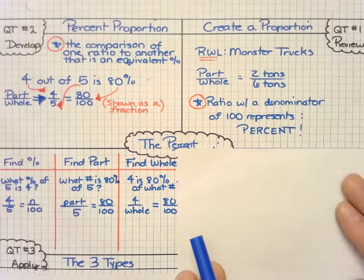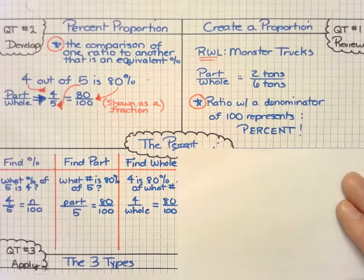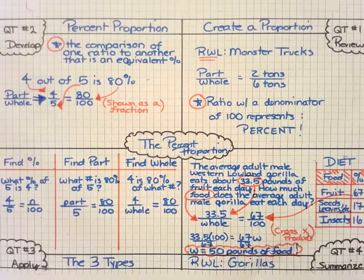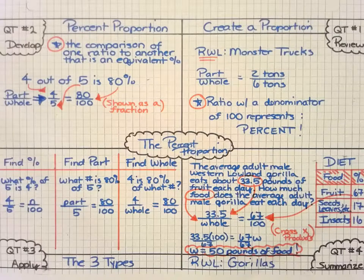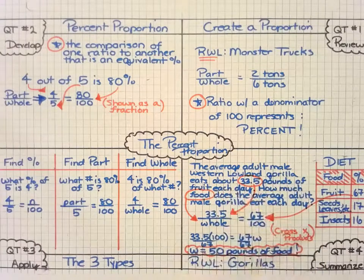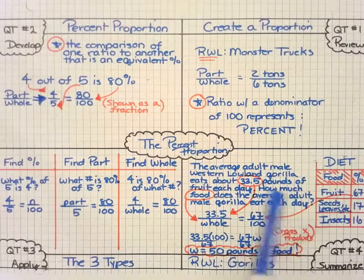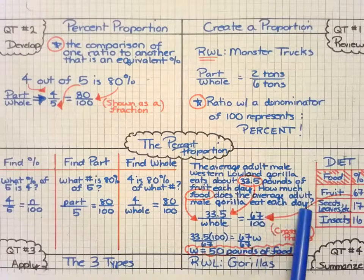Finally, we can apply that to some other real world topics, like some of my favorites, the gorillas. So the average adult male western lowland gorilla eats about 33.5 pounds of fruit each day. How much food does the average adult male gorilla eat each day?